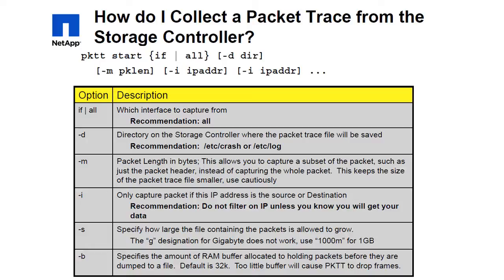The -s option allows you to set a maximum size of the trace file. The default is 1 GB and the maximum value is 32 GB. This parameter is only useful in conjunction with the -d option.